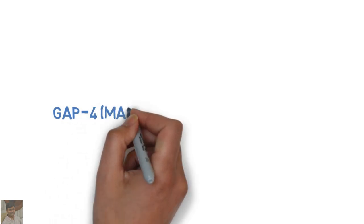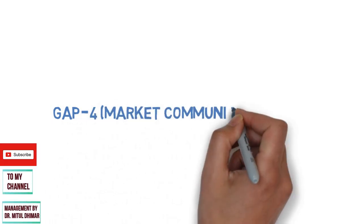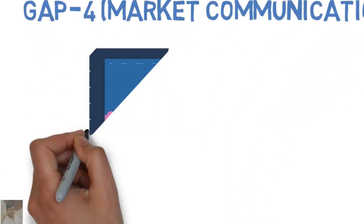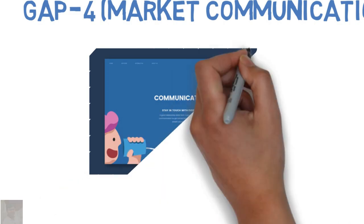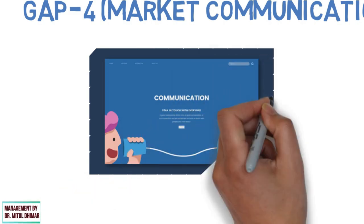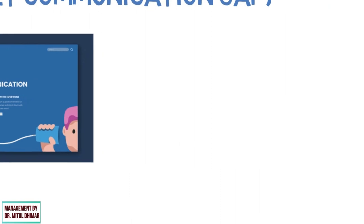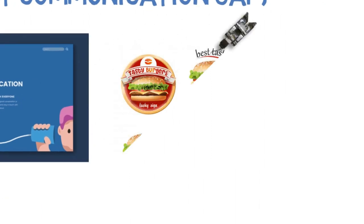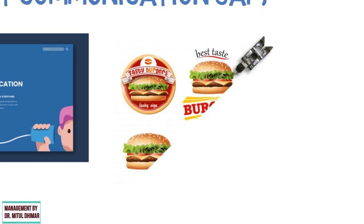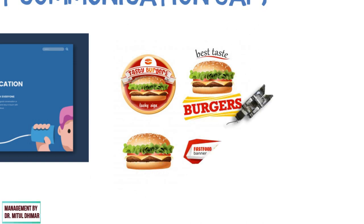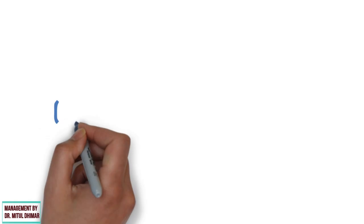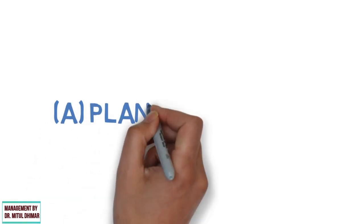Gap number four is the market communication gap. This gap occurs when the service delivered is not as per the expectation created by the communication made by the organization. For example, if Burger King were to suffer from this gap, it could be because the burger was good but it wasn't as large or delicious as it looked in the advertising. The first reason for gap number four could be a planning problem.